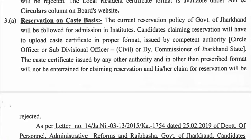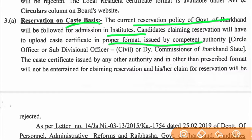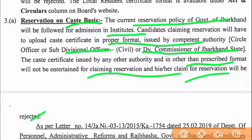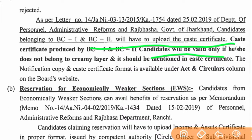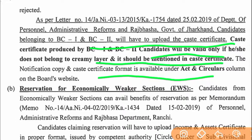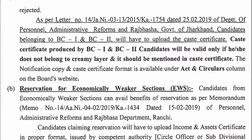For caste-based reservation, the same policy of the Government of Jharkhand will be followed for admission in institutes. Candidates claiming reservation must upload a caste certificate in proper format issued by the competent authority — circle officer, sub-divisional officer (SDO level), or deputy commissioner (DC level) of Jharkhand state. Certificates from any other authority will not be entertained and the reservation claim will be rejected. For BC1 and BC2 candidates, the caste certificate will be valid only if the candidate does not belong to the creamy layer, and this must be mentioned in the certificate. The notification copy and caste certificate format are available under the Acts and Circulars column on the board's website: jccb.jharkhand.gov.in.